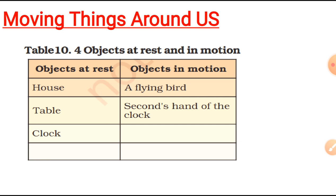Now which of these objects are moving and which are at rest? It's very easy to find out. Have a look. We have a table and we have marked all of it. Those objects which are at rest are house, table, the clock.